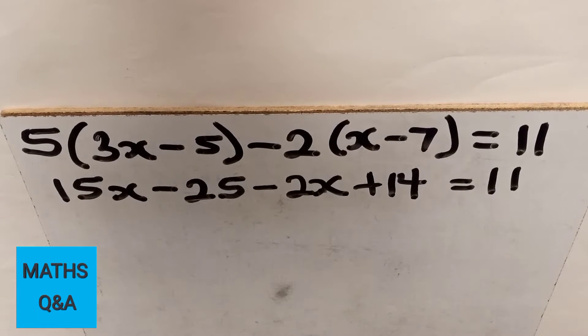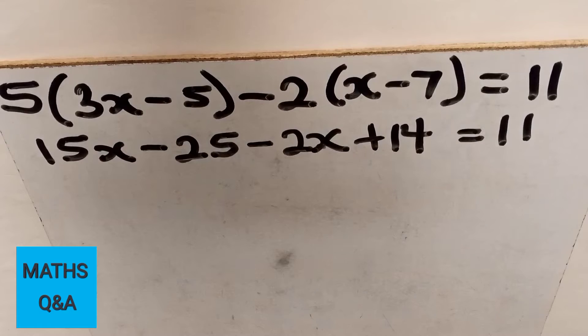Now that we've expanded the brackets, the next thing to do is to group like terms. We can decide to send all the constant numbers to the right hand of the equal sign or the left hand of the equal sign, anywhere you want to arrange it is okay.